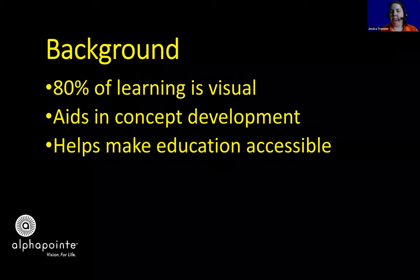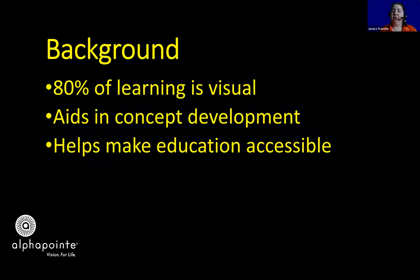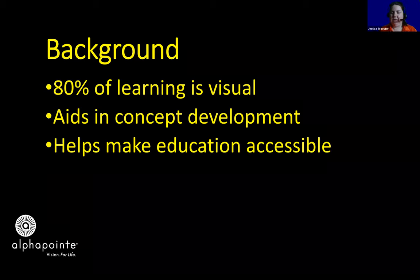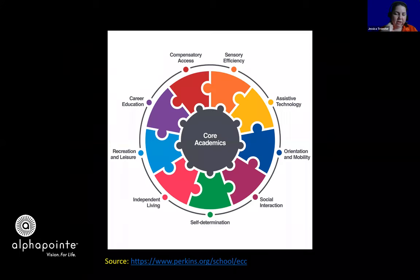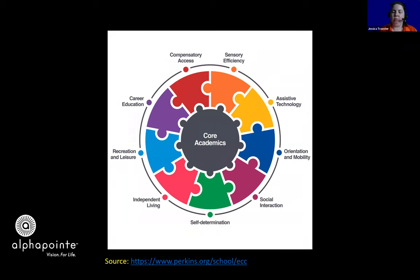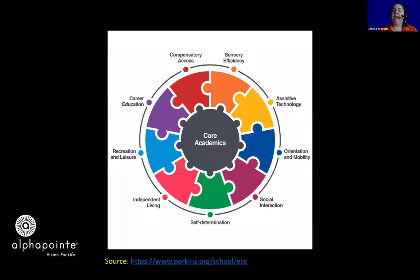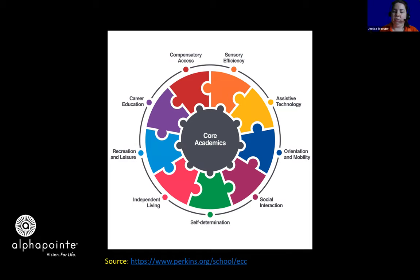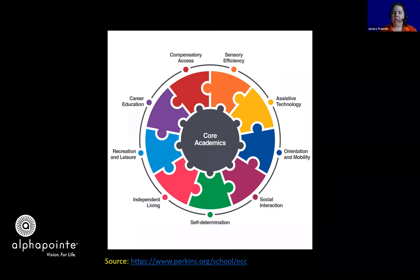The expanded core helps develop those concepts and makes education accessible. We have a graphic here from www.perkins.org/school/ECC — ECC stands for expanded core curriculum. In the center of the graphic is a gray circle representing core academics, shaped like a puzzle piece. Surrounding it are more colorful puzzle pieces representing the nine areas of the expanded core curriculum needed to access that central core academics.